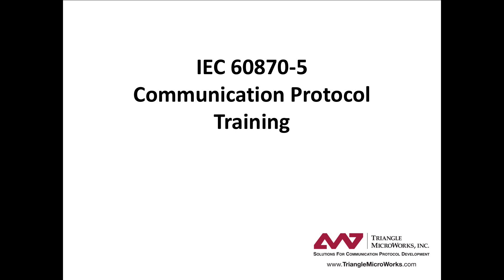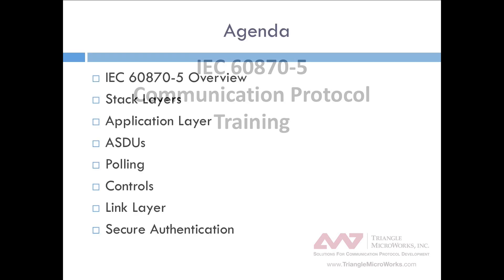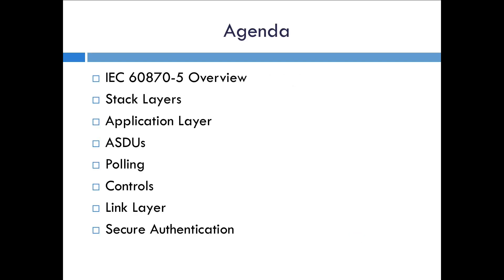Welcome to the Triangle Microworks IEC 60870-5 communication protocol training videos. This video will give a brief overview of the 60870-5 protocol, which I'll sometimes refer to simply as 60870, and will also contrast it somewhat with the Distributed Networking Protocol, or DNP3. This is the fifth and final video in the series. In the first four videos, we provided an overview of IEC 60870-5, talked about the various layers of the protocol, and went over key functionality like polling and controls. In this video, we'll discuss secure authentication in IEC 60870-5 and wrap it up with a conclusion.